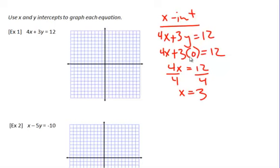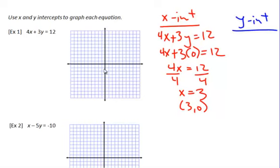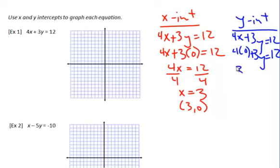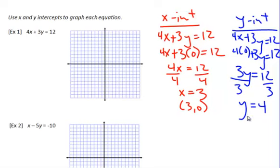Remember, we plugged zero in for y, so when x is 3, y is zero — so the point is (3, 0). Now for the y-intercept, instead of making y zero, we're going to make x zero, because when the line crosses the y-axis, x is always zero. So same equation, 4x plus 3y equals 12, but now x becomes zero. Four times zero is just zero, so we're left with 3y equals 12. Divide by 3 on both sides, and y equals 4. When x was zero, y was 4, so that point is (0, 4).